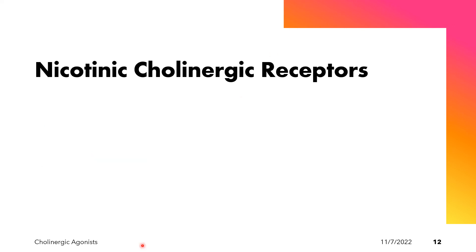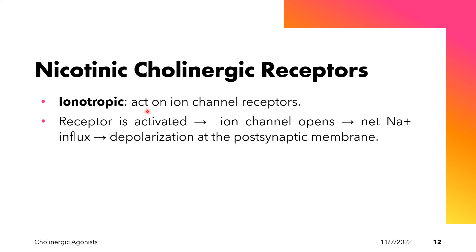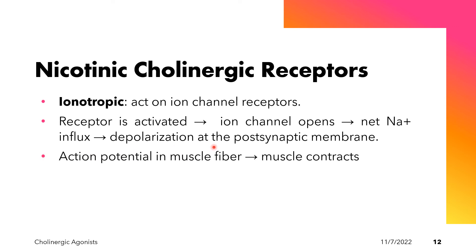For the nicotinic cholinergic receptors, they are ionotropic, meaning that they act on ion channel receptors. When nicotinic receptors are activated, the channel opens and leads to the inward movement of sodium into the cell, which depolarizes the cell at the postsynaptic membrane. This generates an action potential that travels from one muscle fiber to another, ultimately leading to skeletal muscle contraction.